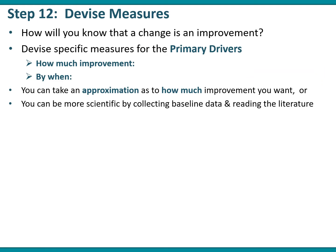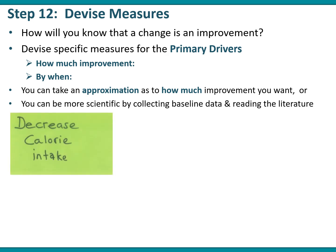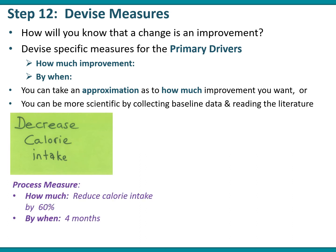Further with devising your measures, you're trying to work out how will you know that a change is an improvement. You look at your different primary drivers and work out how much improvement you want and by when. You can either take an approximation or be more scientific by collecting baseline data and reading the literature. With David, he might want to reduce his calorie intake by 60% within four months.